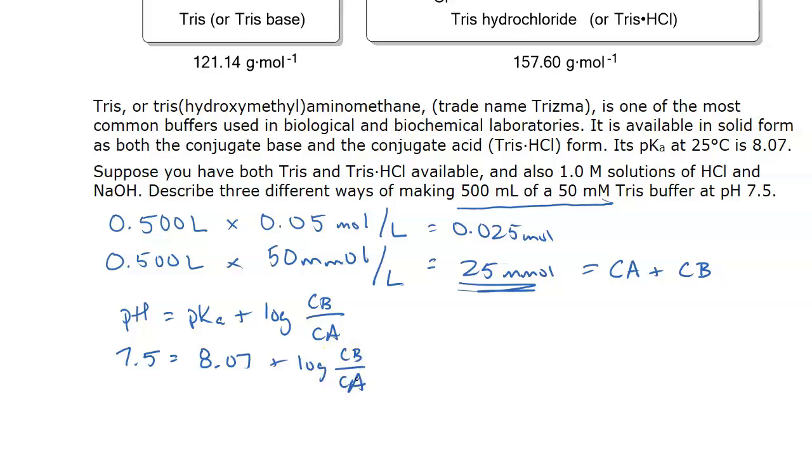So you just get out your calculator. Take 7.5, subtract 8.07. You get a negative 0.57. And then take the inverse log of that or 10 to the negative 0.57. And you get 0.269 is this ratio. Now we have what in algebra class they would say two equations and two unknowns. You've got an equation that sums the conjugate acid and conjugate base to get 25.